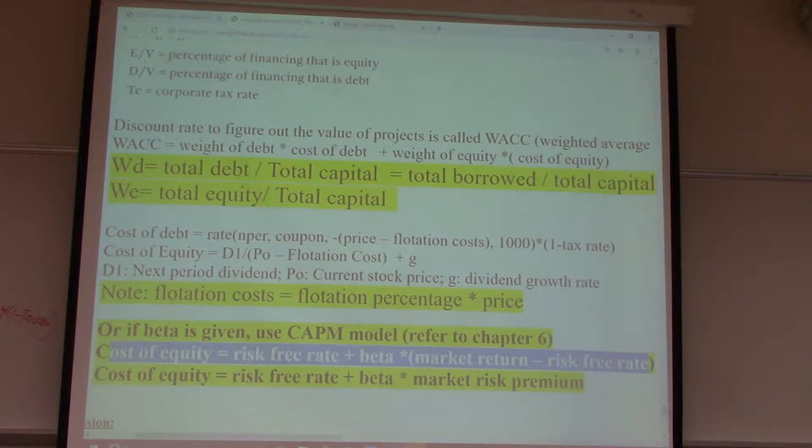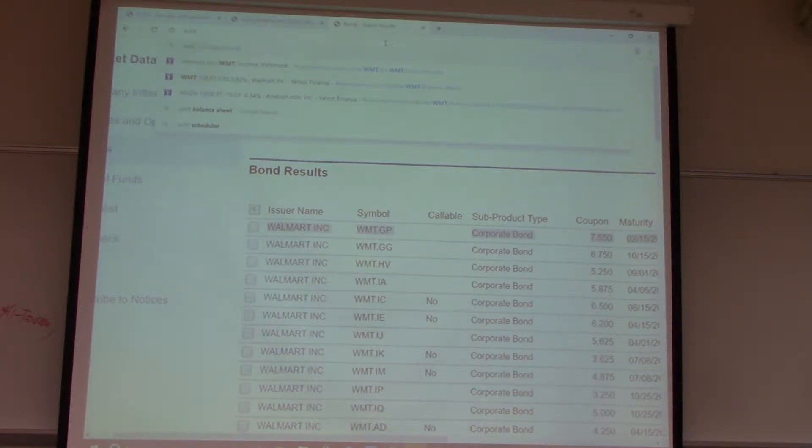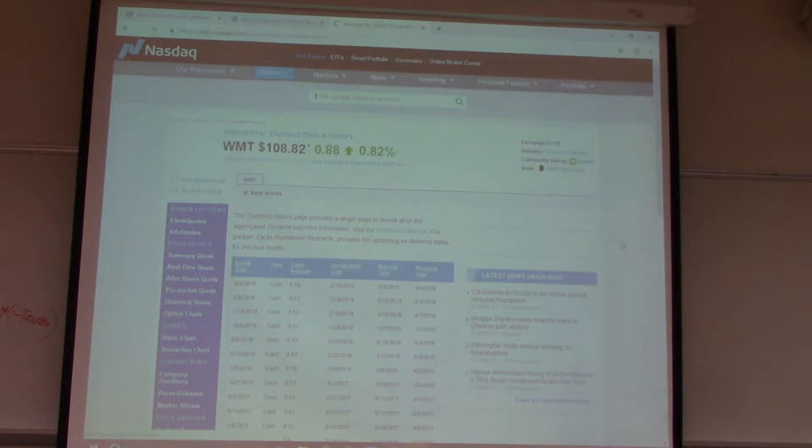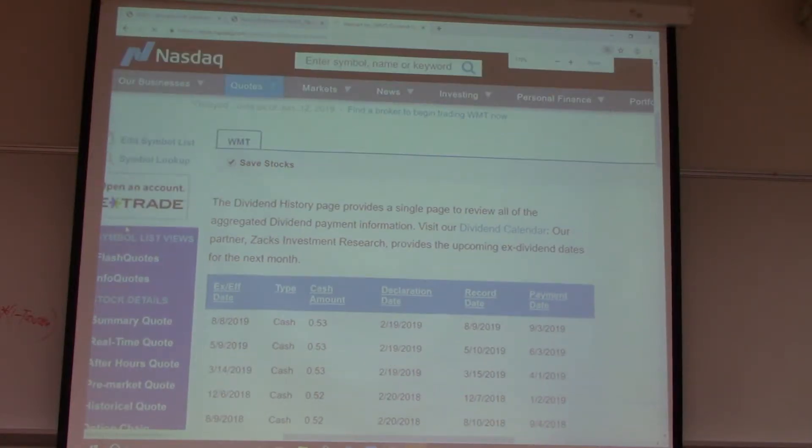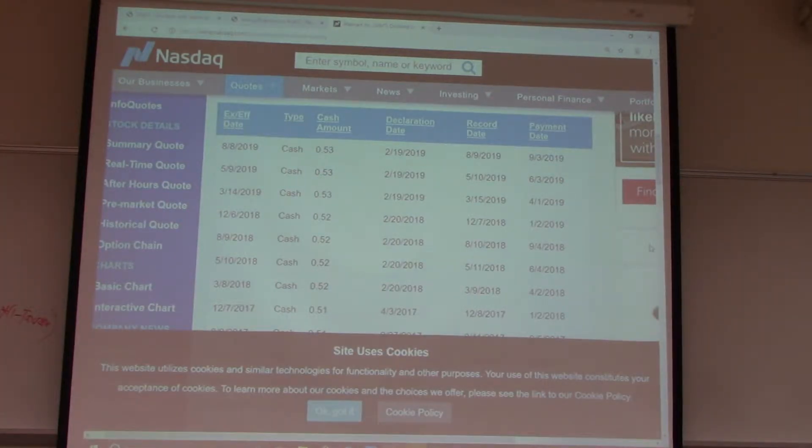Now, let's calculate it. Let's use dividend growth model. Like in the calculator, I'm using the dividend growth model to do this cost of equity. We need to know D1. D1 is the next period dividend of Walmart. Walmart increased by one cent every quarter next year. So, D1 over price minus flotation plus G. So, this is the equation.